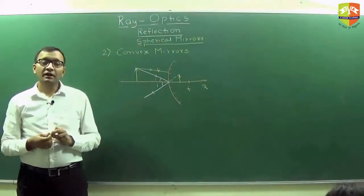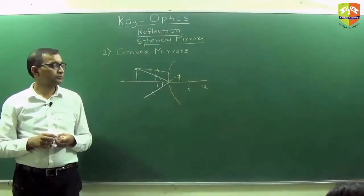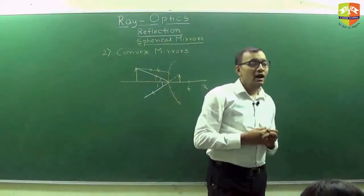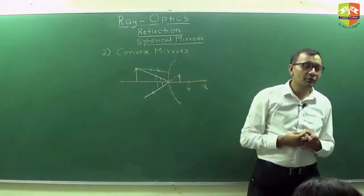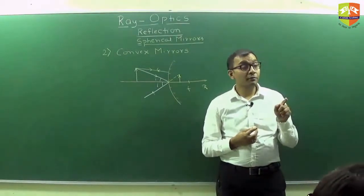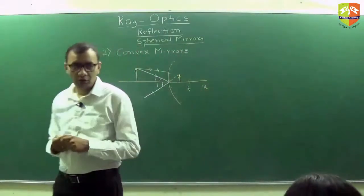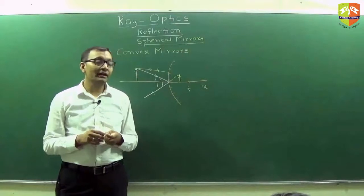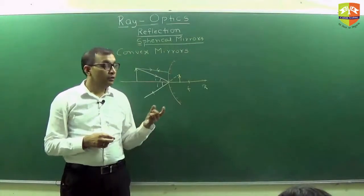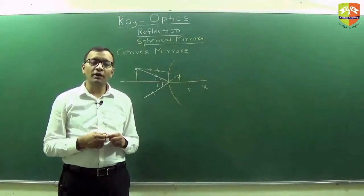Virtual, diminished, erect. So if you have been given two virtual images, how will you identify whether this virtual image is from a concave or convex mirror? For concave it will be magnified; for convex it will be diminished. So if the size has gone down and it is a virtual image, you should be able to identify whether it is convex or concave.